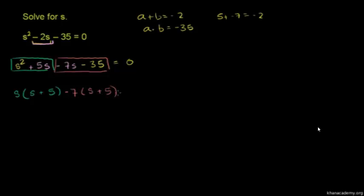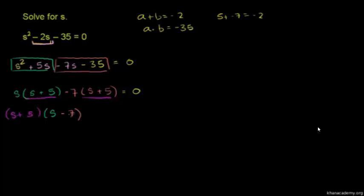And of course all of that is equal to 0. Now we have two terms where both of them have s plus 5 as a factor. So we can factor that out: s plus 5 times s — s plus 5 times s gives you the first term — and then you have minus 7. I undistributed the s plus 5, and this is going to be equal to 0.